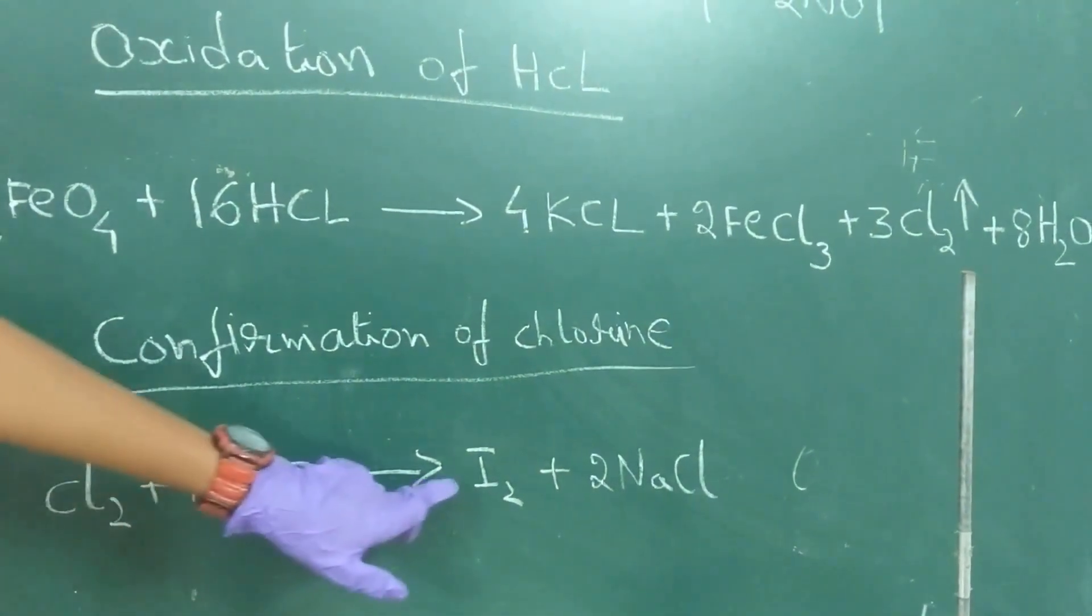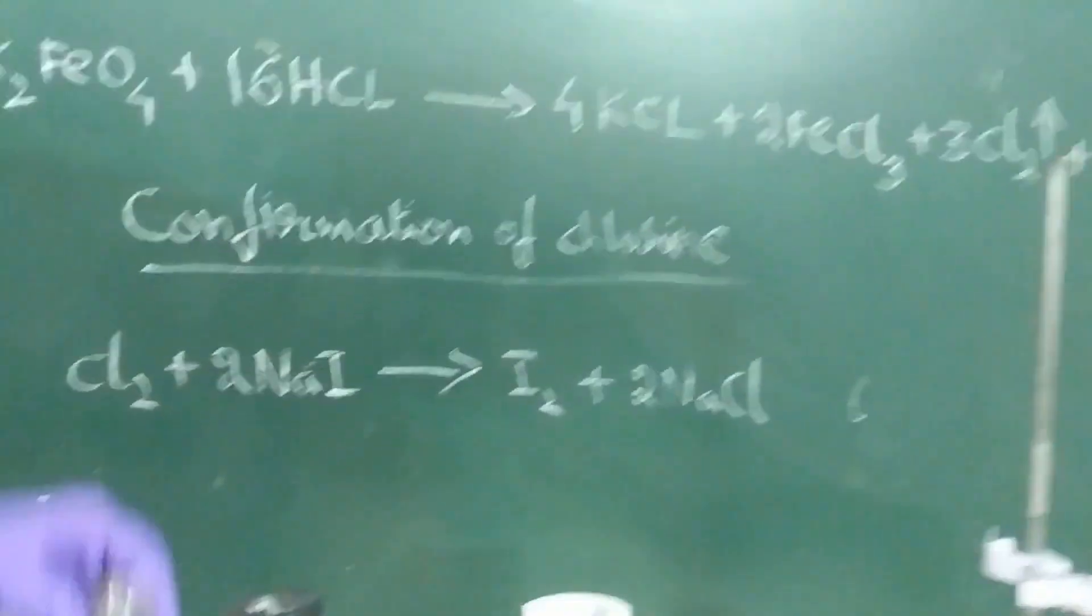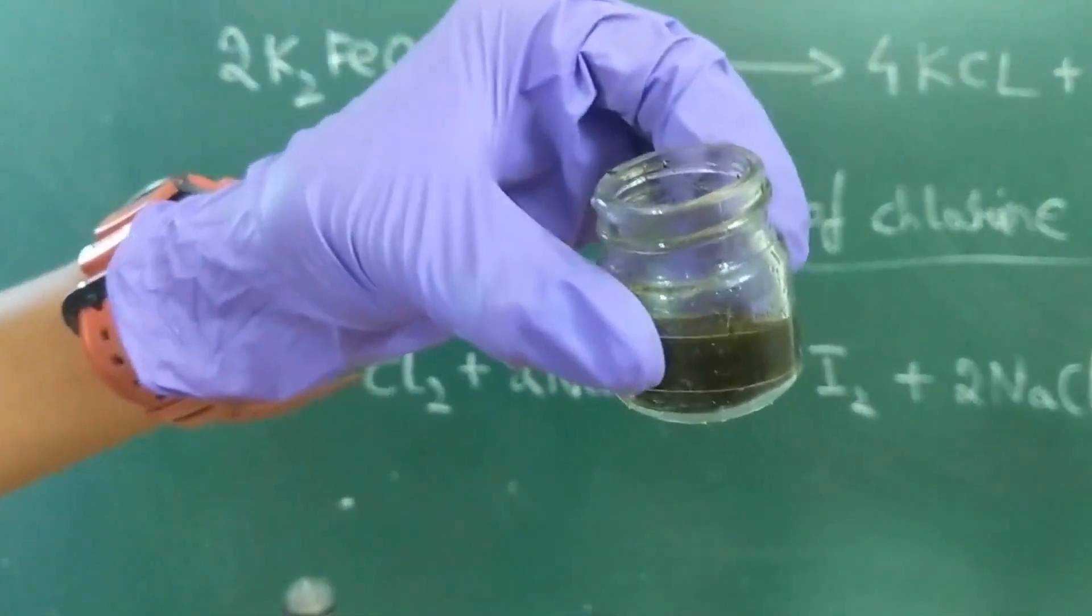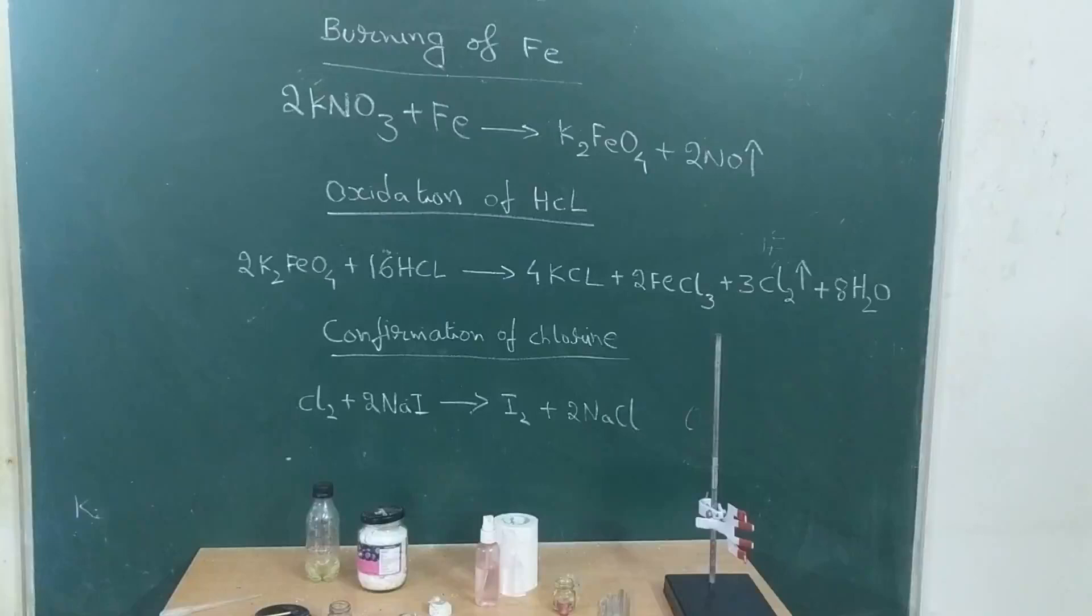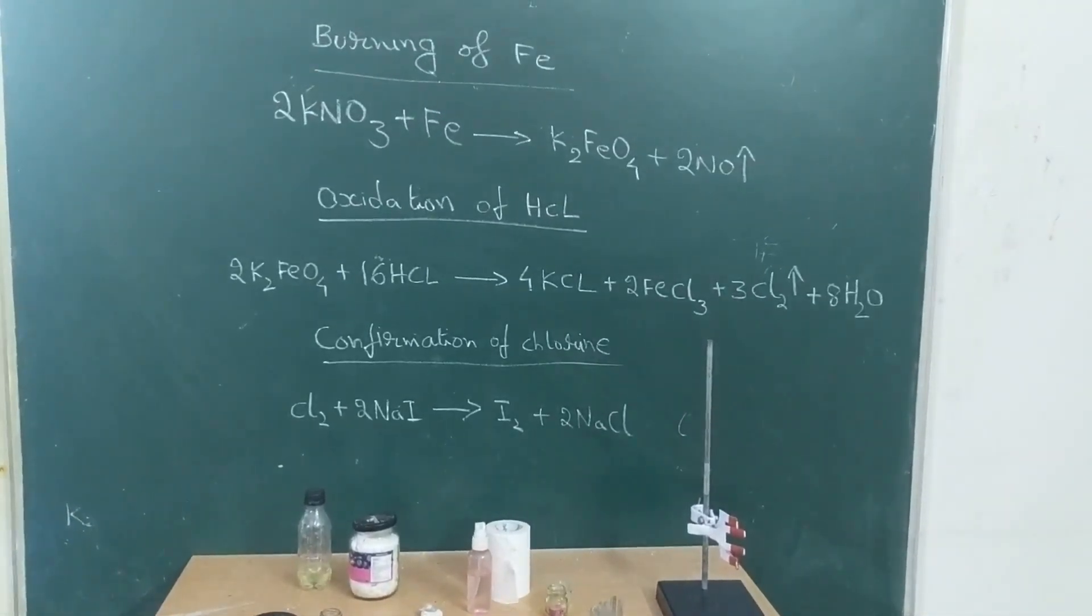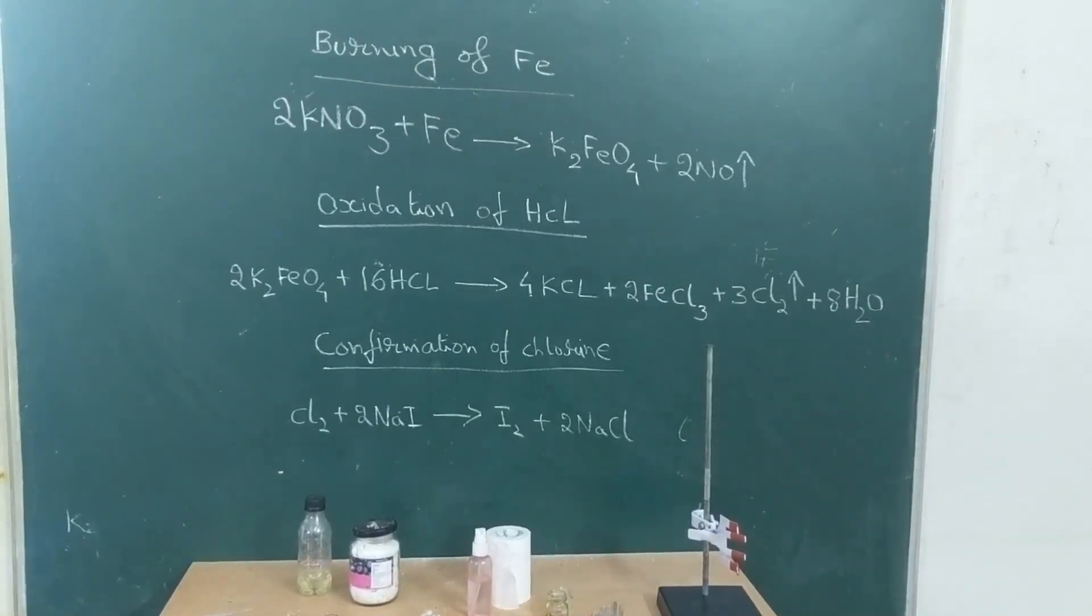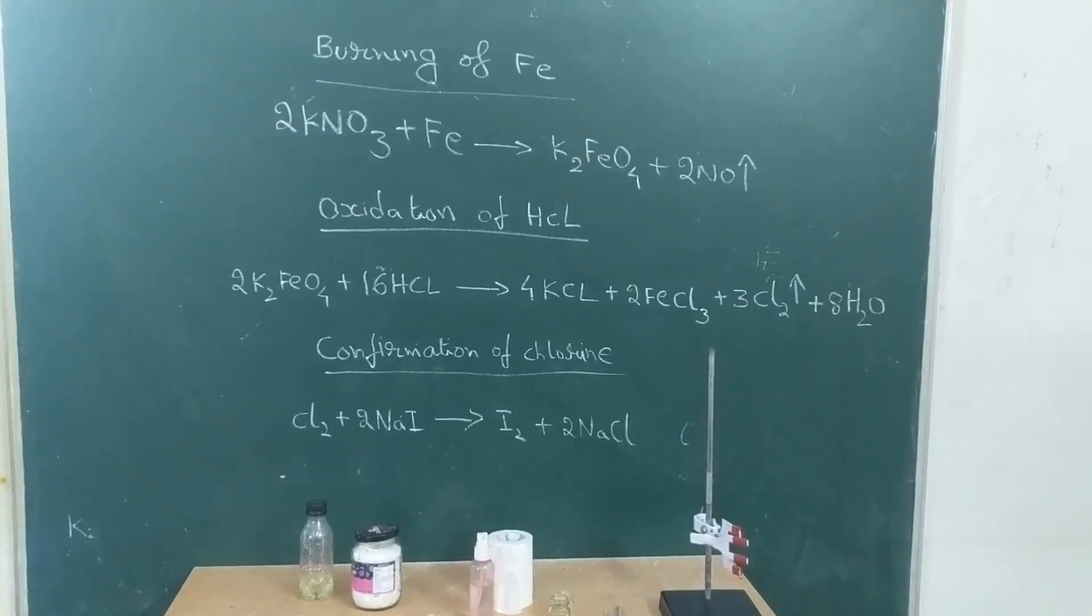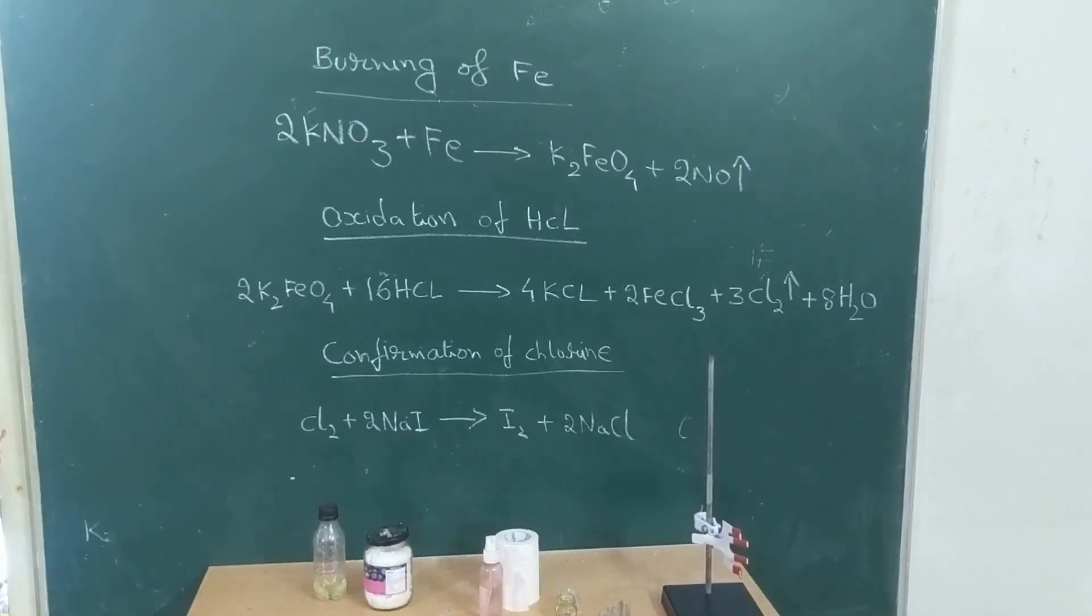As you can see, the solution is now tinted a very dark yellow due to the formation of ferric chloride. In summary, we saw a brilliant purple flame due to the oxidation of iron, which gave us the product of potassium ferrate. We then proved the presence of this compound of iron using concentrated hydrochloric acid. Thank you for watching, I hope you enjoyed this video.